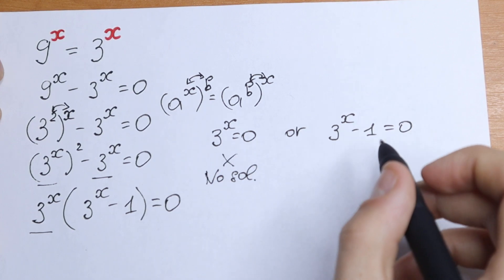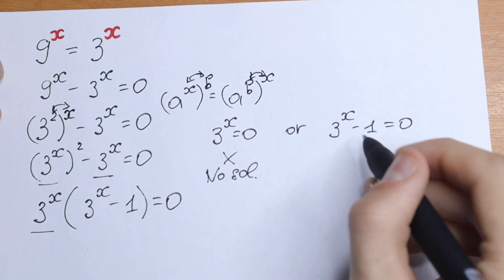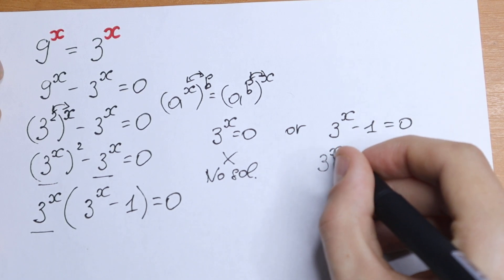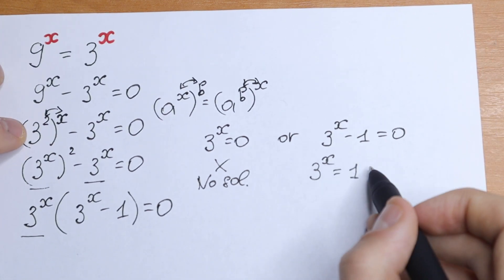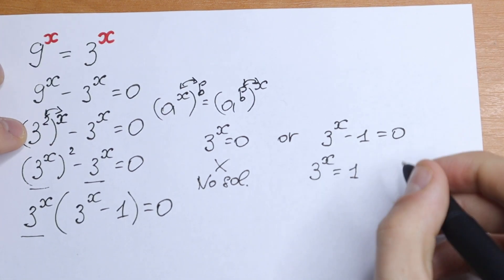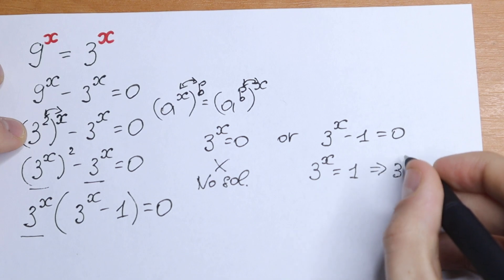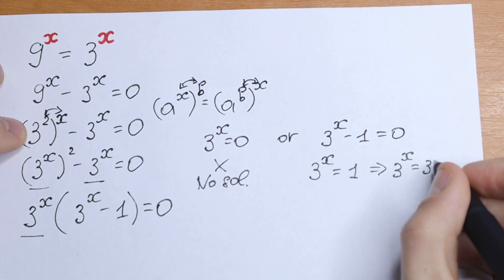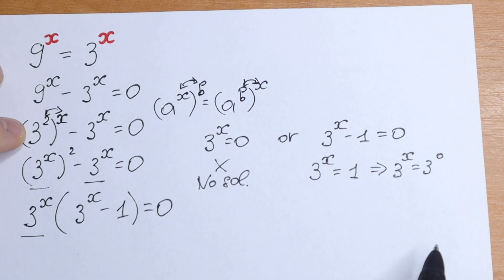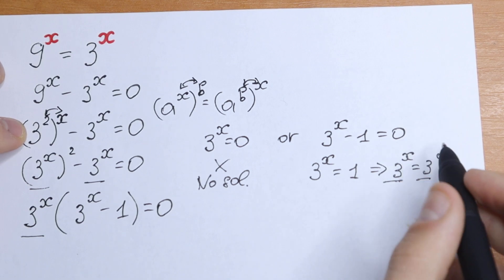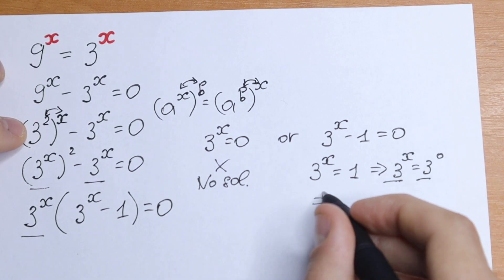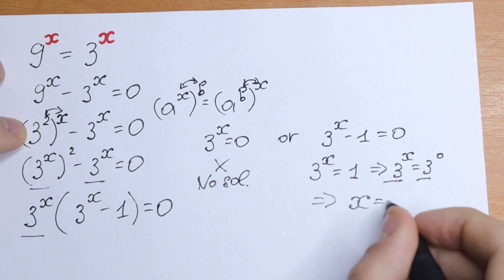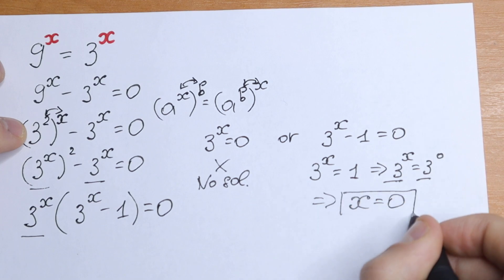Take a look at the second case: 3 to the power x minus 1 equal to 0. Let's bring the 1 to the right: 3 to the power x equal to 1. We can express 1 as 3 to the 0 power. So we have 3 to the power x equal to 3 to the 0 power, and since we have the same base, the exponents must be equal. Therefore x equal to 0 is the one and only solution.